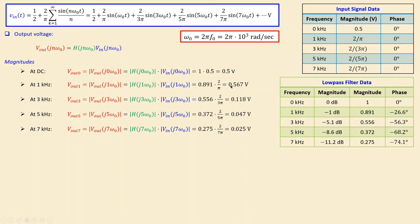At 3 kHz, the input voltage magnitude is 2 over 3 pi and the low-pass filter magnitude, from the Bode plot at minus 5.1 dB, converts to a scalar of 0.55604. Multiplying these gives 0.118 volts. In a similar form for the next two frequencies — 5 kHz and 7 kHz — we obtain those output voltage values. Collecting all of these results in a table makes them clearly visible.